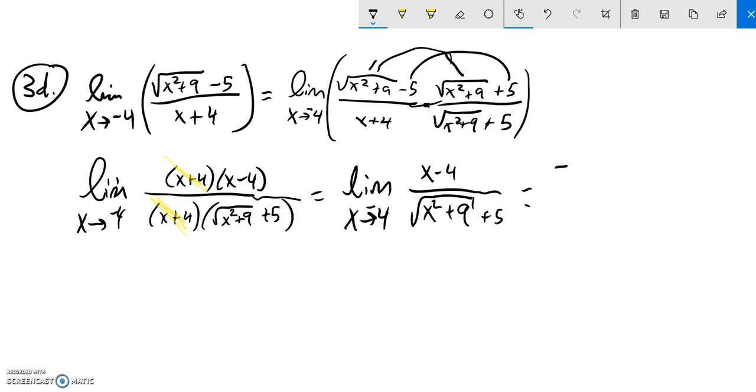So I can do some direct substitution. So negative four minus four divided by square root of negative four squared plus nine, square root of that whole thing, plus five.